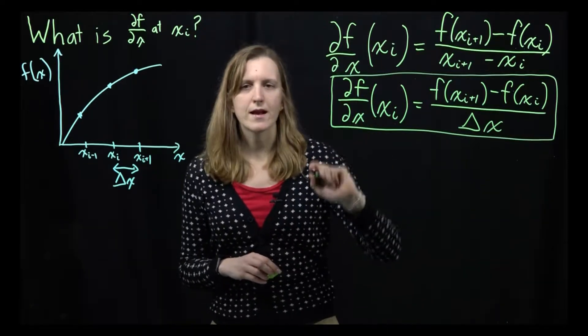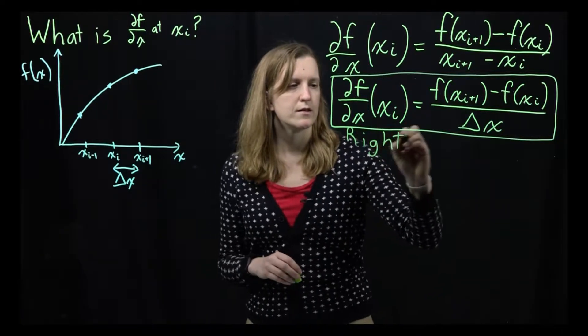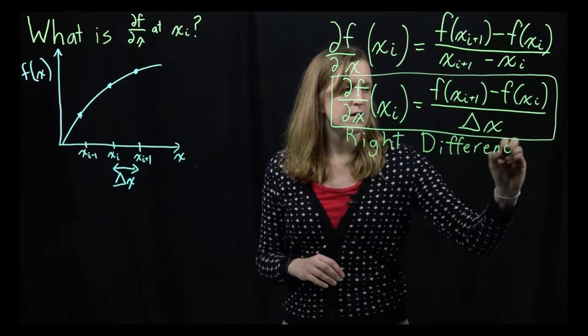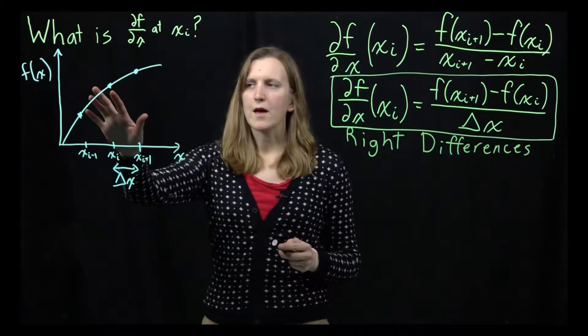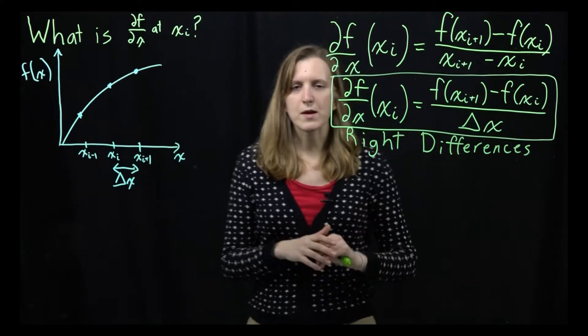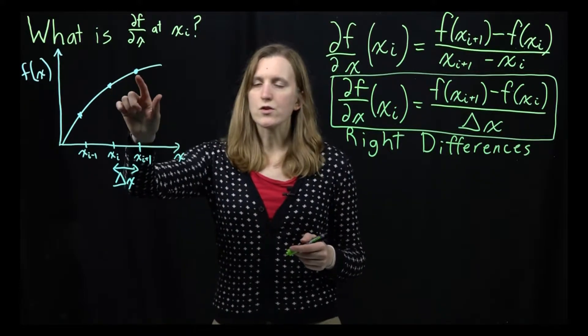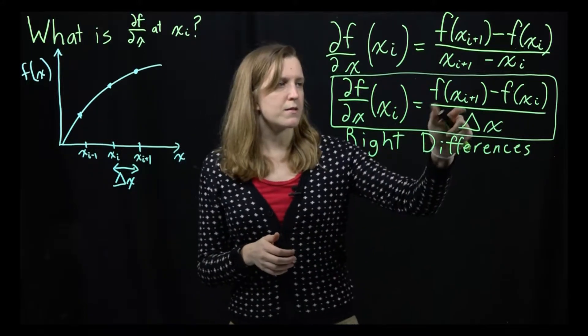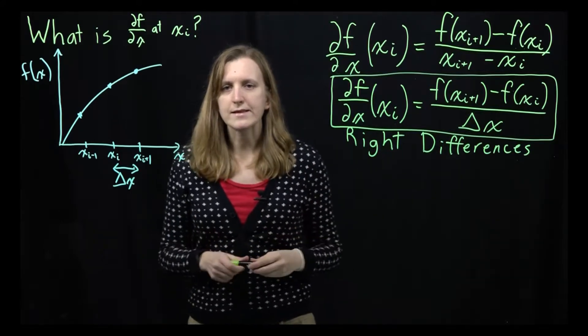This specific method that I just showed here, this is what's known as right differences. Right differences because we've taken the value of our point, and we've looked at what's the value to the right of it. So this is right differences. We can also estimate our slope in different ways. We could use it here, and use the point to the right. We could have also done it and used the point to the left. And so rather than being i plus one, this would be just i and i minus one. That's what's known as left differences.